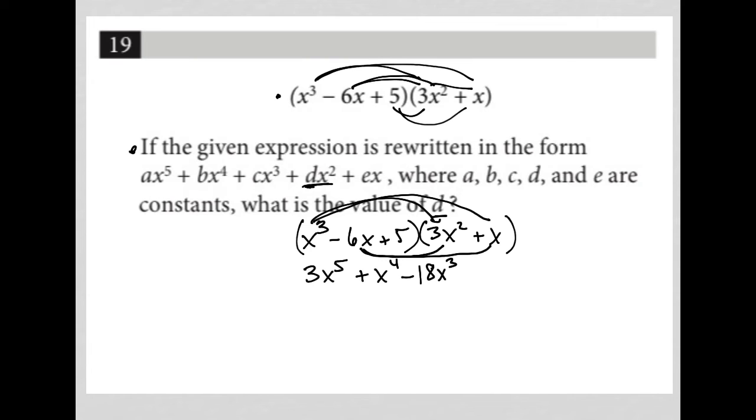Negative 6x times x is negative 6x squared. And 5 times 3x squared is positive 15x squared. And 5 times x is positive 5x.